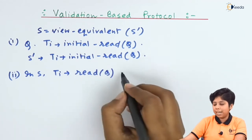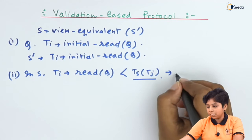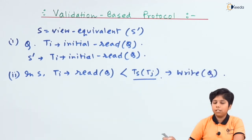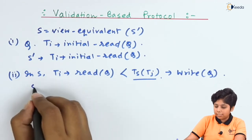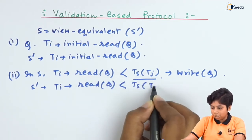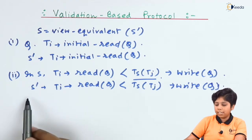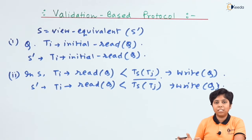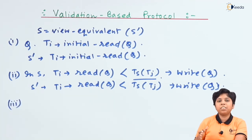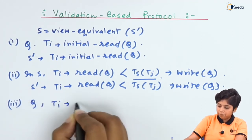Second, if in schedule S, Ti is performing a read on Q with a timestamp less than Tj — meaning Tj appeared after Ti which performed a write on Q — then in S-dash also, Ti is performing that read on Q and that is less than Tj which is performing the write on Q. So in both S and S-dash, we are performing a read operation on Q followed by a write operation from another transaction.